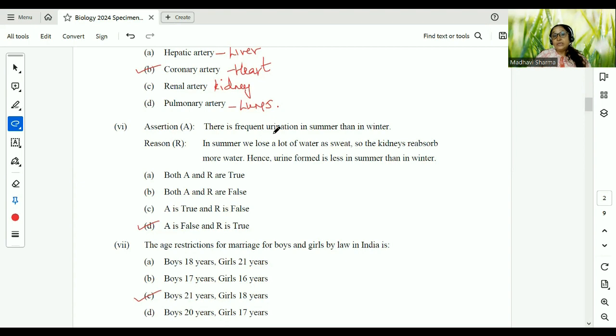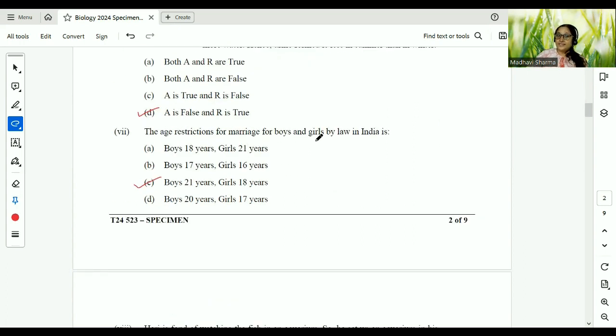Assertion. There is frequent urination in summer than in winter. No, false. Because summer we sweat a lot, so there is less urination. So A is false. In summer we lose a lot of water as sweat. True. So the kidneys reabsorb more water. True. Hence urine formed is less in summer than in winter. True. Answer A is false and reason is true. The age restrictions for marriage for boys and girls by law in India is boys is 21 and girls is 18.